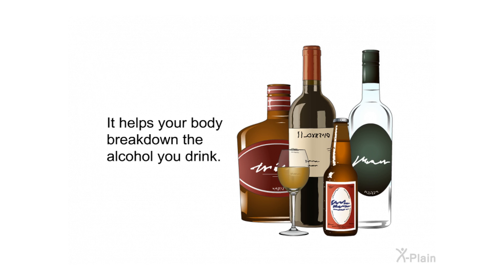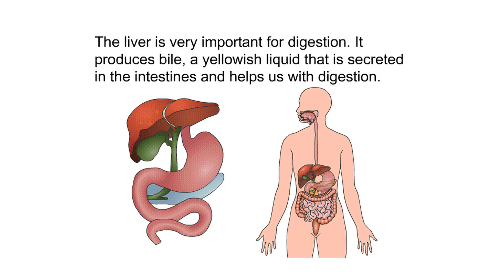The liver helps your body break down the alcohol you drink. The liver is also very important for digestion — it produces bile, a yellowish liquid that is secreted in the intestines and helps with digestion.